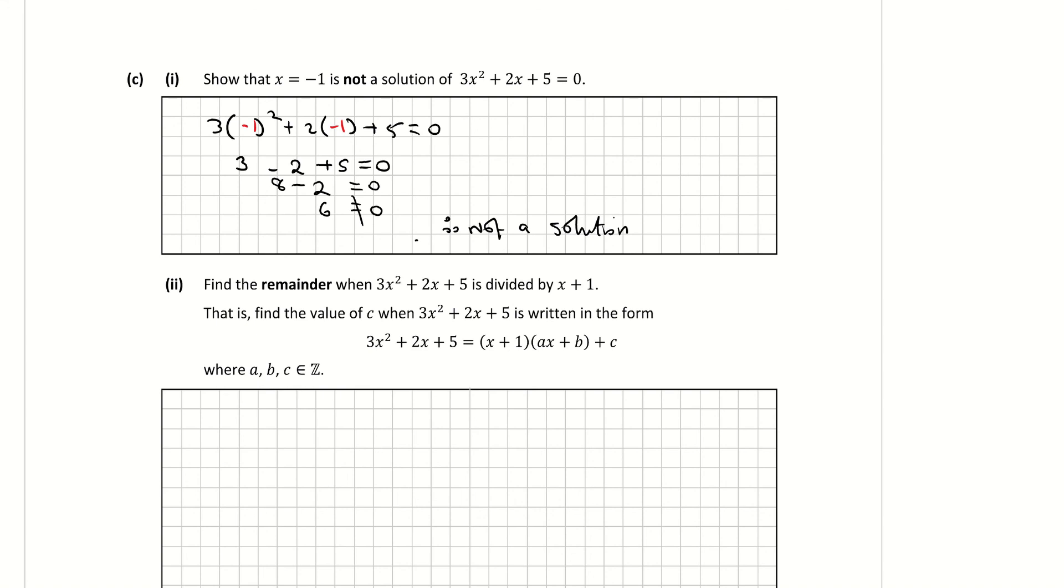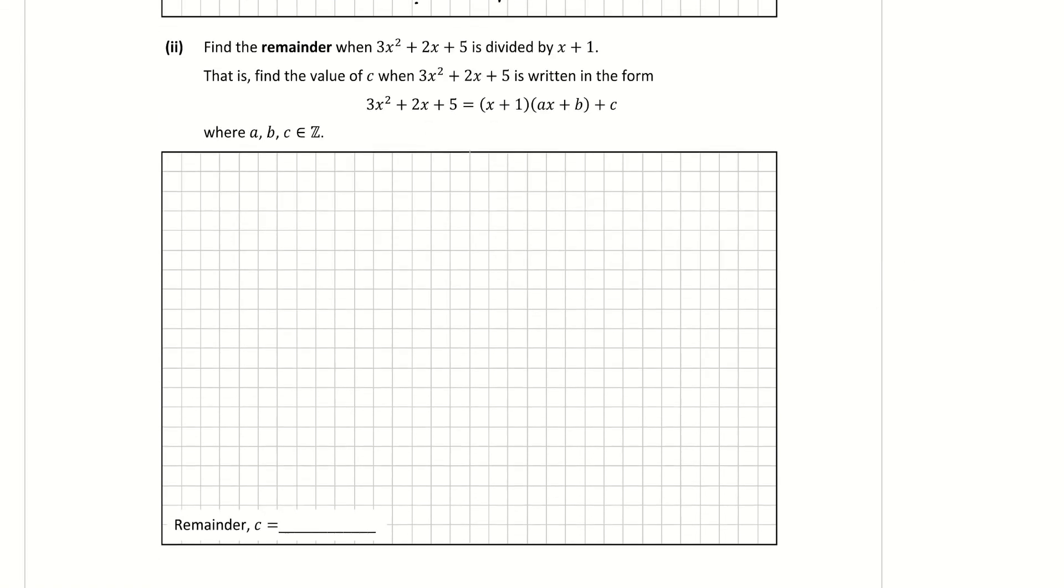Part 2: Find remainder when 3x² + 2x + 5 is divided by x + 1. So using algebra here, I'm going to divide x + 1 into 3x² + 2x + 5.